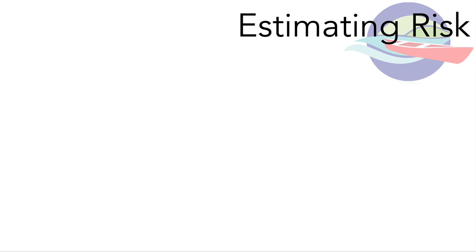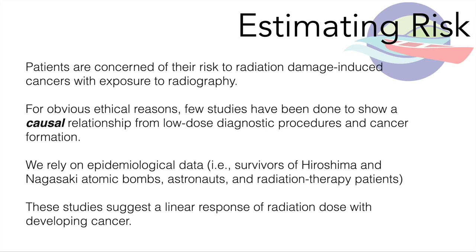Obviously no research ethics board in the world is going to allow anyone to do a study to show cause and effect of radiation and cancer occurrence — just blasting someone with radiation and coming back in five years to see if their cancer incidence is higher. Obviously we can't ask that question ethically. So all of our understanding is based on epidemiological data sets — from survivors of atomic bombs, from astronauts who have floated in space near those cosmic rays, or from radiation therapy patients. And from these big epidemiological studies, it's suggested that there is a linear response of radiation with the development of cancer.